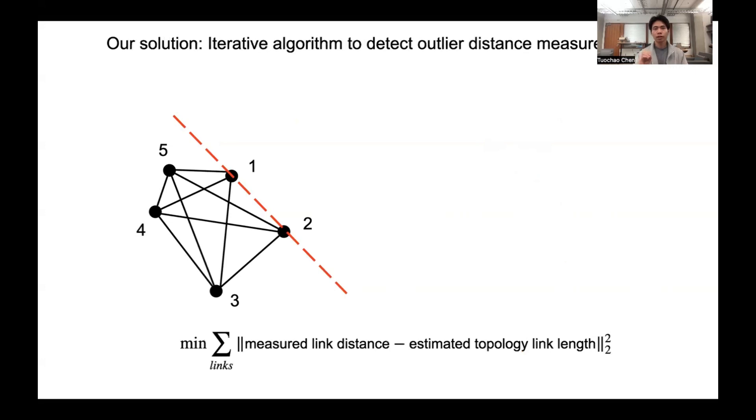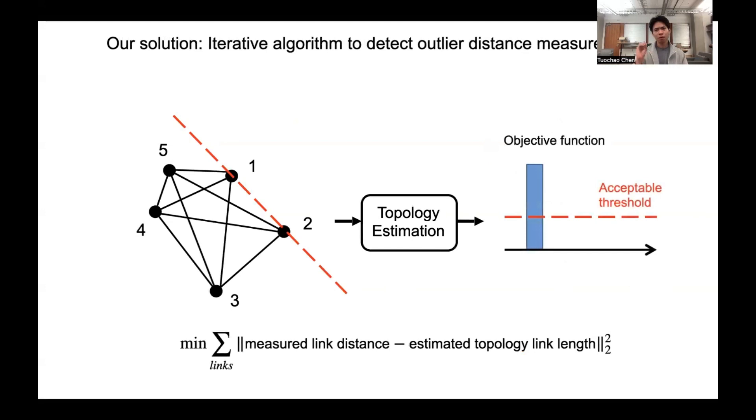Our solution is using an iterative algorithm to detect outlier measurements by using an objective function as shown below. If the objective function is above an acceptable threshold, we know that there might be some erroneous measurements. Say we drop the link between 1 and 5 and recompute the topology. Since this link is not the erroneous link, the objective function is still high.